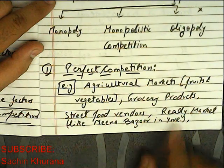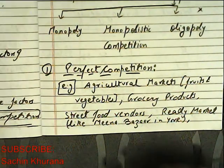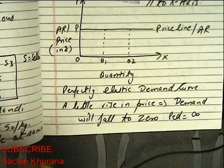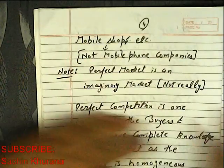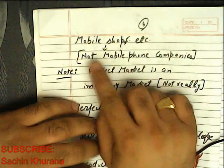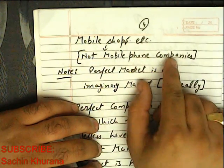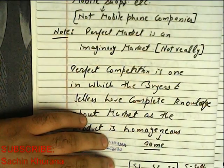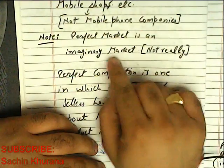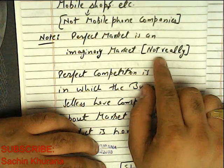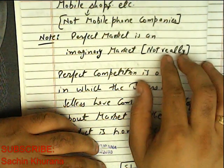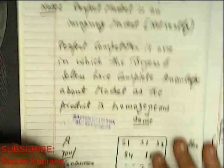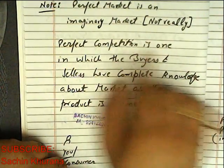Also mobile shops — and remember, I'm not talking about mobile phone companies, I'm talking about mobile shops. Although some economists believe that the perfect market is not an imaginary market, it does exist, as the examples I've discussed with you show.